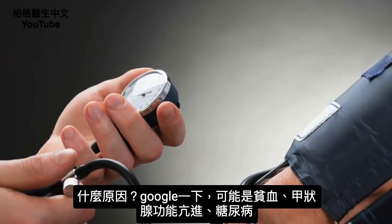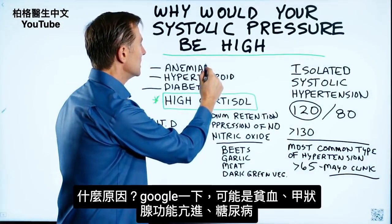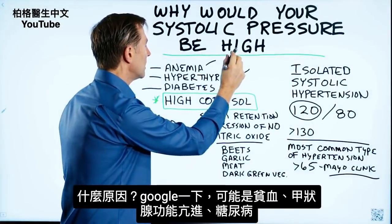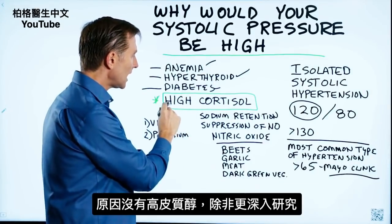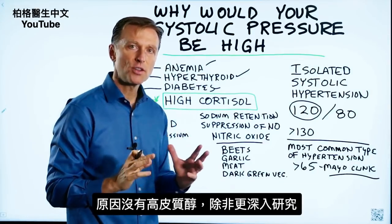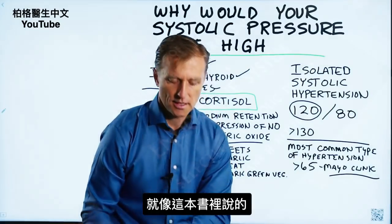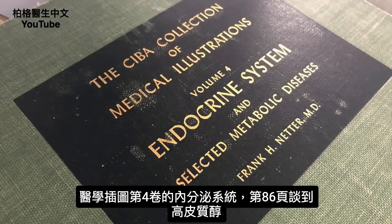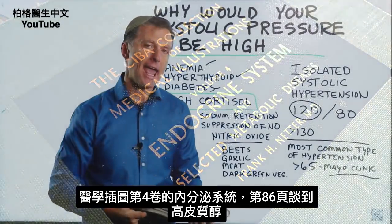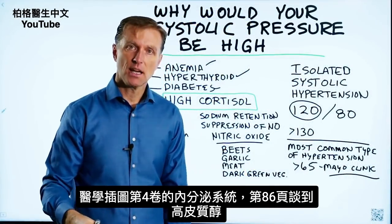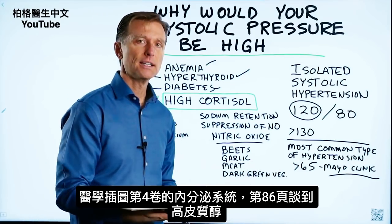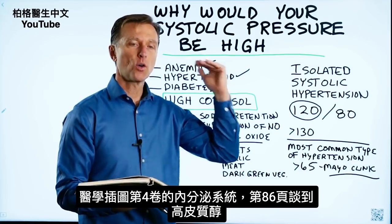What causes this? If you do Google research, you'll see that it could be anemia, hyperthyroid, or diabetes. But you won't find high cortisol unless you dig into other references, like this book right here — the Ciba Collection of Medical Illustrations, Volume 4, Endocrine System, page 86.